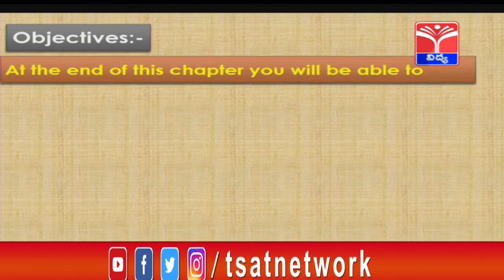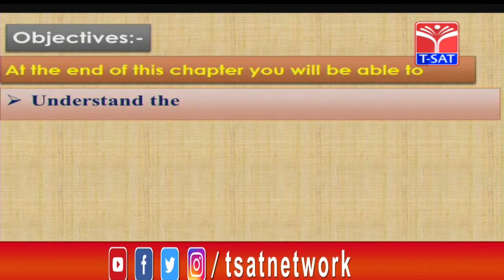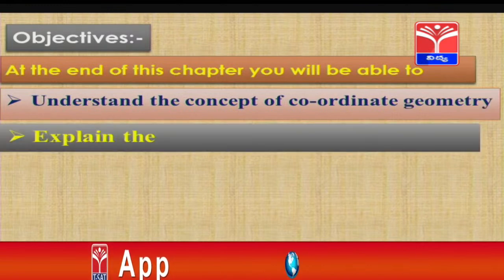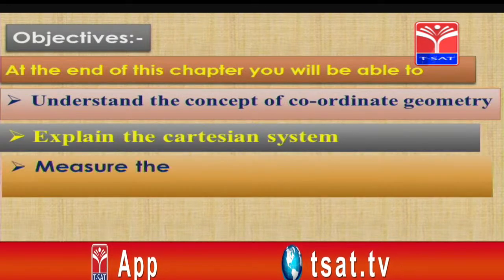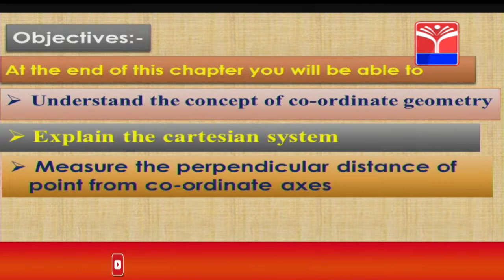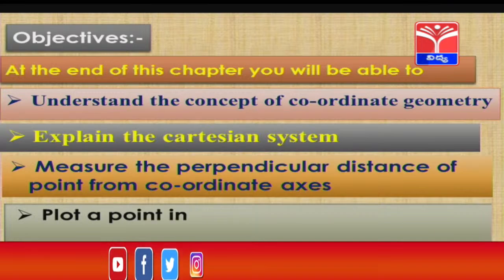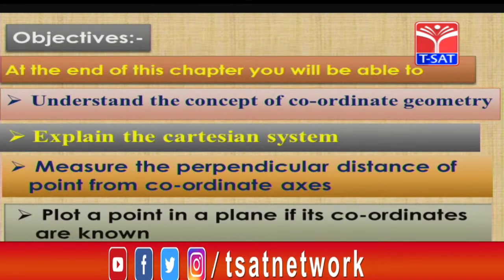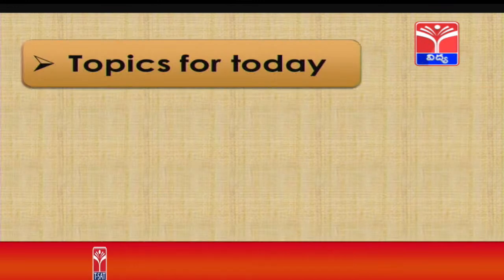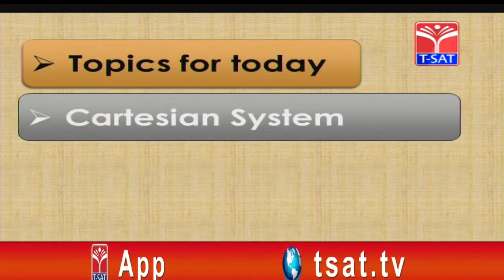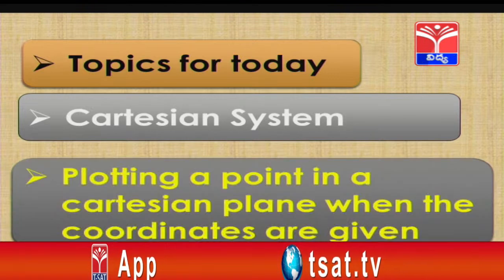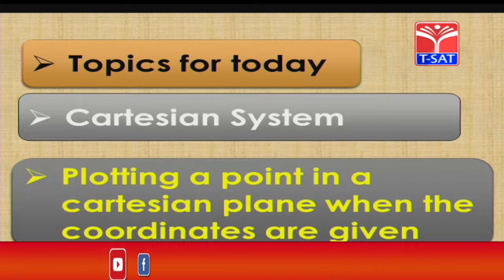You can identify or locate a point in a plane with respect to two references. Let us learn today's topic: coordinate geometry. Objectives - at the end of this chapter you will be able to understand the concept of coordinate geometry, explain the Cartesian system, measure the perpendicular distance of a point from the coordinate axis, and plot a point in a plane if its coordinates are known. Topics for today: the Cartesian system and plotting a point in a Cartesian plane when the coordinates are given.